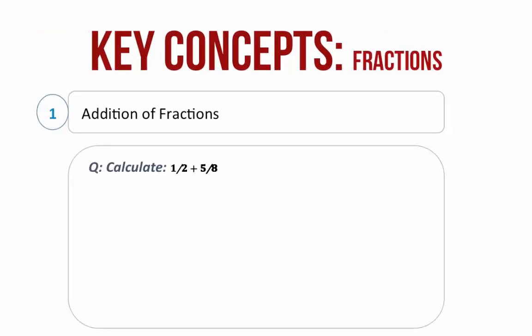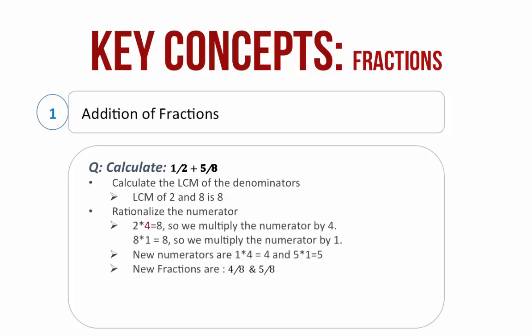Addition of fractions. Let us take an example: calculate 1 by 2 plus 5 by 8. First, we need to calculate the LCM of the denominators. The lowest common multiple of 2 and 8 is 8. Now we rationalize the numerator. 2 into 4 is equal to 8, therefore we multiply the numerator of 1 by 2 by 4. 8 into 1 is equal to 8, so we multiply the numerator of 5 by 8 by 1. Therefore the new numerators are 1 into 4 is 4 and 5 into 1 is 5. The new fractions are 4 by 8 and 5 by 8.